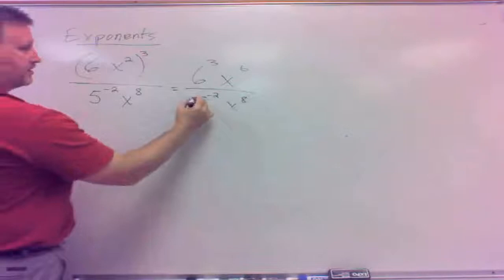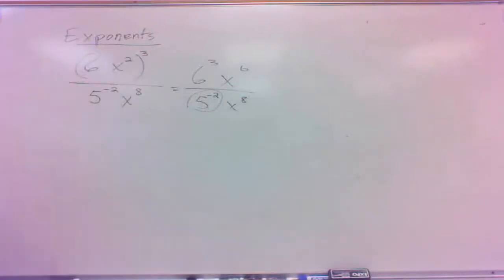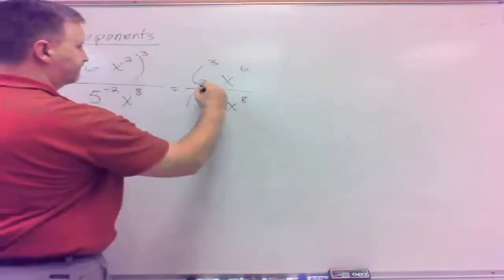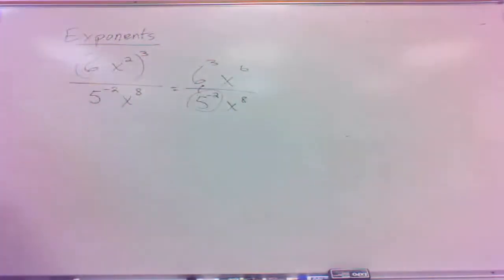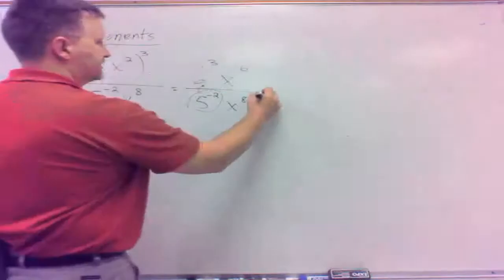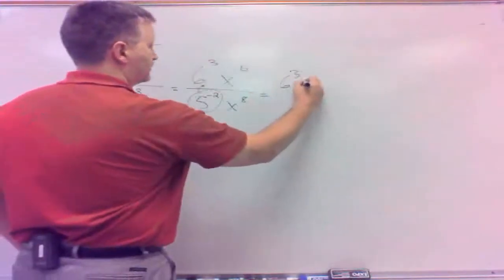What's the deal on negative exponents? Negative exponents need to be changed to positive exponents, and we do that by flipping them or moving them around. That 5 to the negative 2 needs to come up and be in the top somewhere.